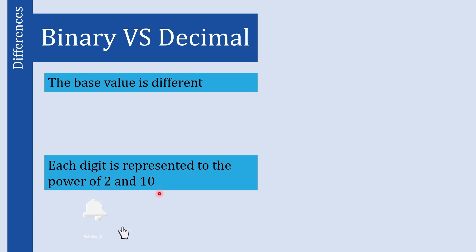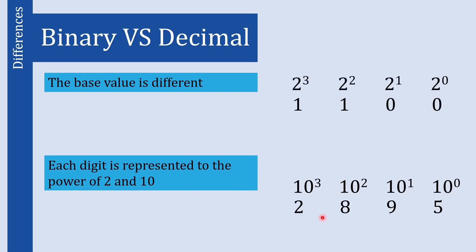In binary, each digit represents a power of 2, whereas in decimal each digit represents a power of 10. For example, in this binary number, if we talk about the magnitude of a particular 1, we can represent it as a power of 2. Starting from the leftmost digit with exponent 0, 1, 2, 3 — so 2 to the power of 3 gives us the magnitude of that 1.